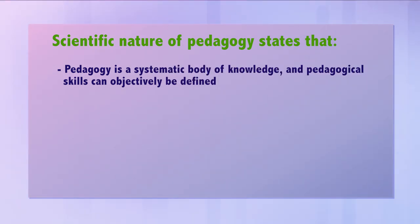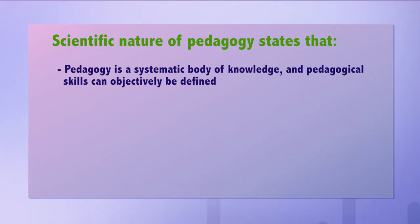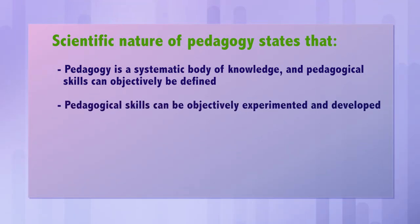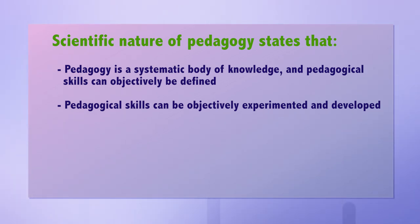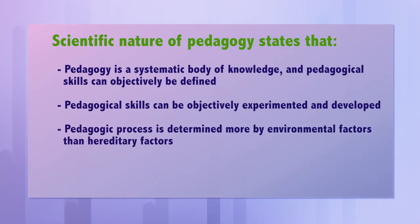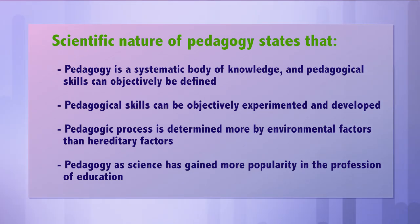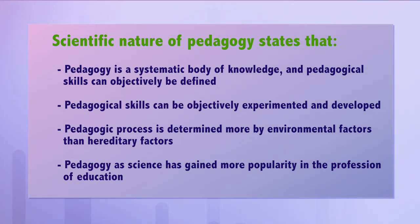Pedagogy as an art claims that the true nature of pedagogy can never be specified and defined in clear-cut words. Further, pedagogy is also considered as a science. Pedagogy as a science claims that it is a systematic body of knowledge and pedagogical skills can be objectively defined, experimented and developed. Pedagogy as a science demands that the pedagogic process is determined more by environmental factors than hereditary factors. Pedagogy as a science has gained more popularity in the profession of education.